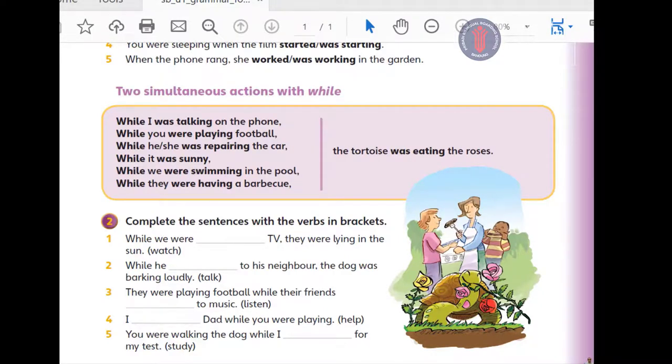All right students, please open your students book page 119. You can see two simultaneous actions with while. There are some examples. For example, while I was talking on the phone, the tortoise was eating the roses. Okay, you can see there are five sentences. Please complete the sentences with the verbs in brackets. Please pause the video and complete the sentences.